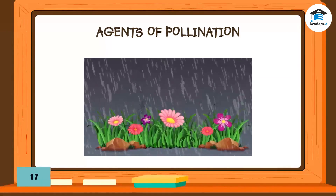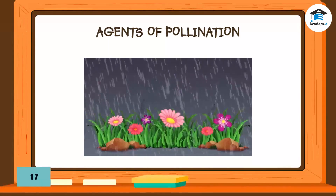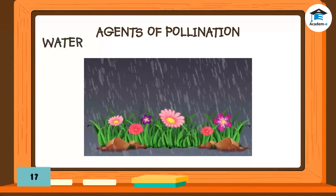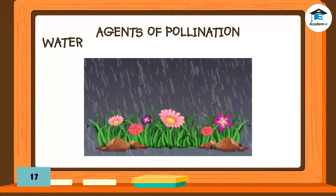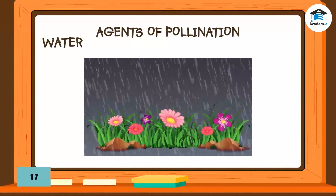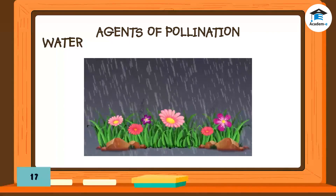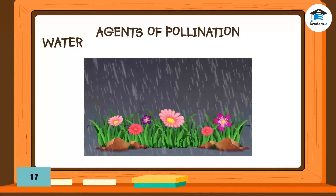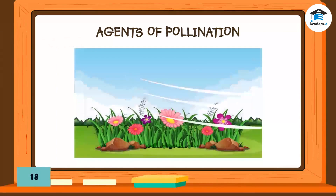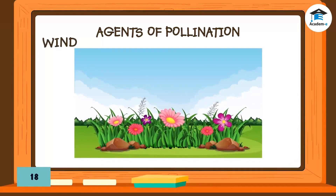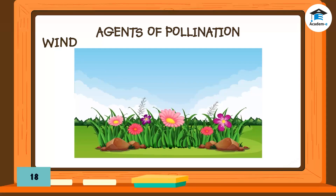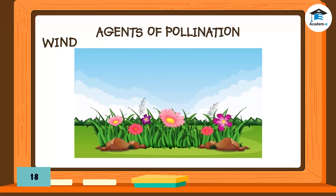Water, like raindrops that fall on a flower, may carry pollen grains as it slides or drops across different flower parts. Some pollen grains may fall on the stigma of another flower along with the water.